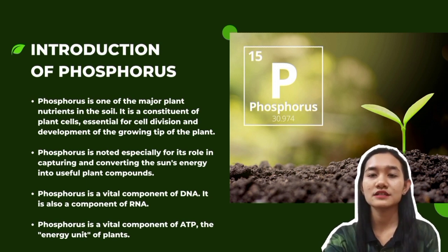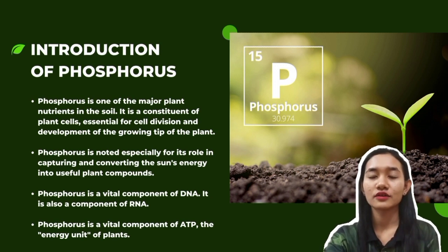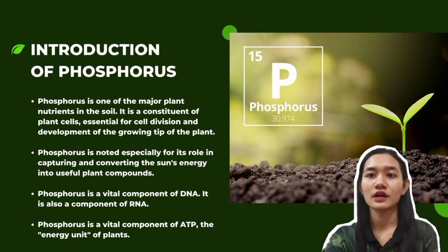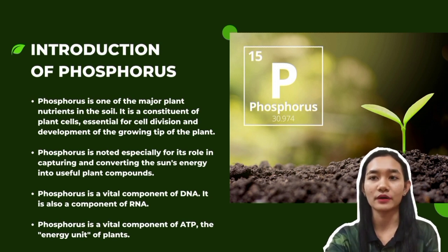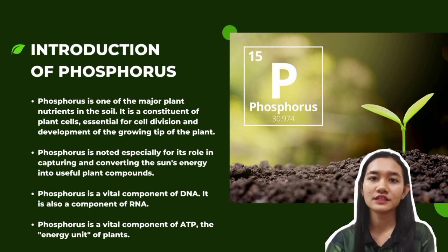Phosphorus is an essential nutrient both as a part of several key plant structure compounds and as a catalyst in the conversion of numerous key biochemical reactions in plants. Phosphorus is noted especially for its role in capturing and converting the sun's energy into useful plant compounds. Phosphorus is a vital component of DNA, the genetic memory unit of all living things.